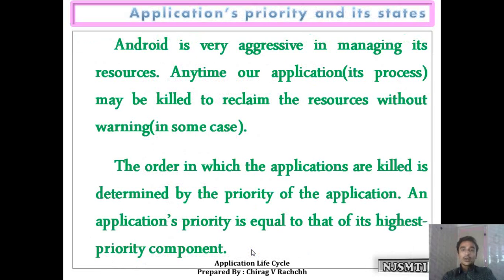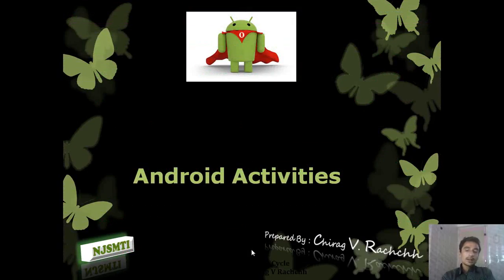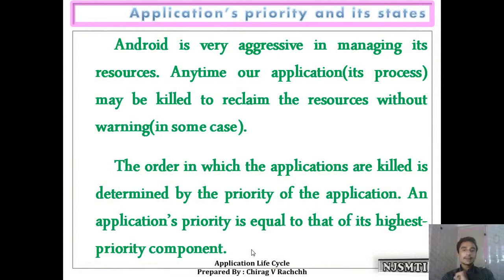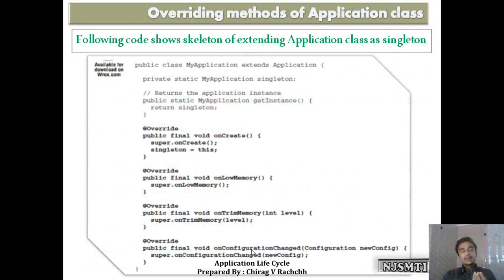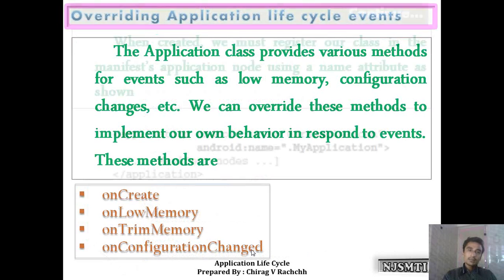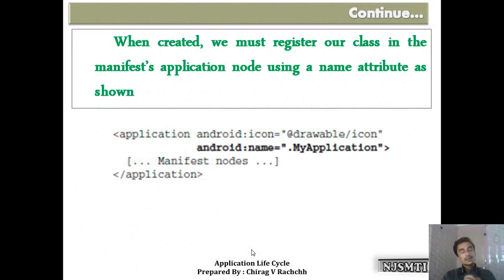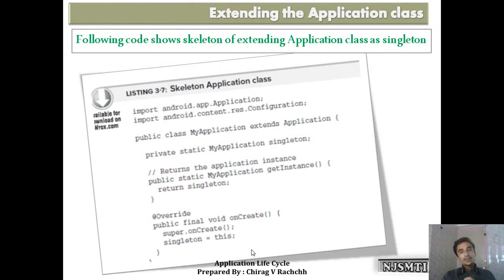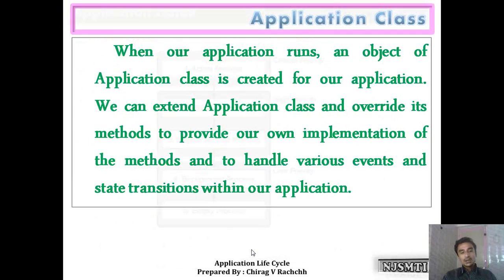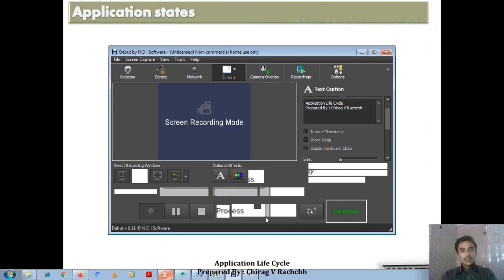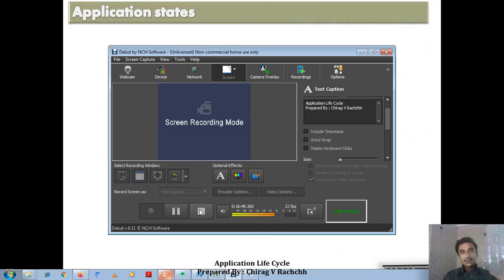We have seen Android application's priority and its state. Android is very aggressive in managing its resources — at any time, if resources are needed, our application can be destroyed, stopped, or killed. This was Android application lifecycle: there is a class called 'Application', an object of which is created for our application by the operating system. As a developer, we can extend this class and implement our own logic. In the next video we will discuss Activities in Android.